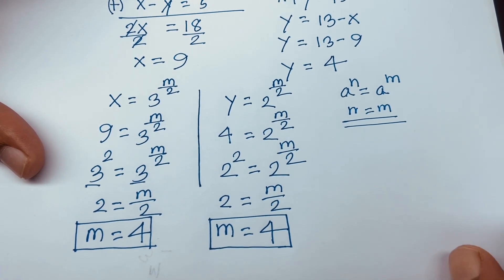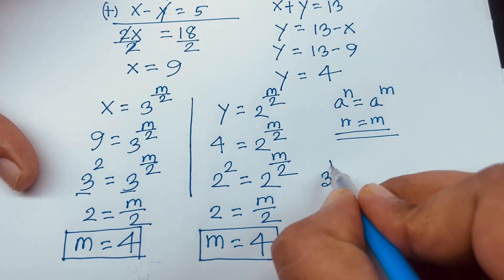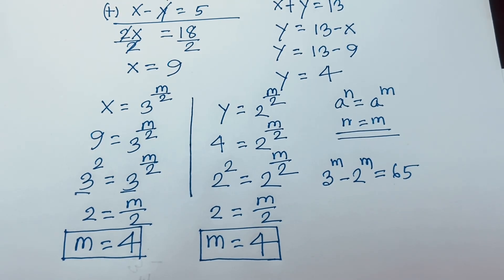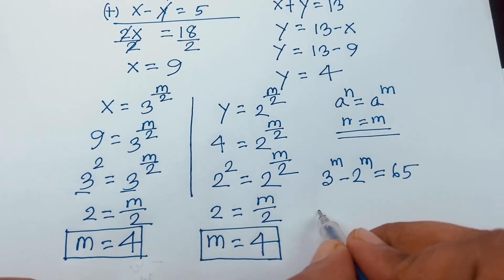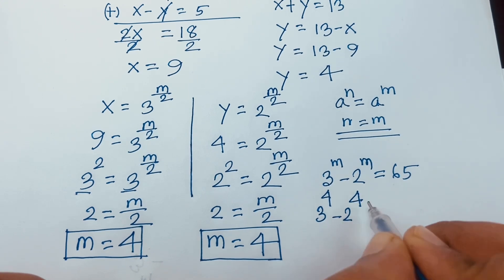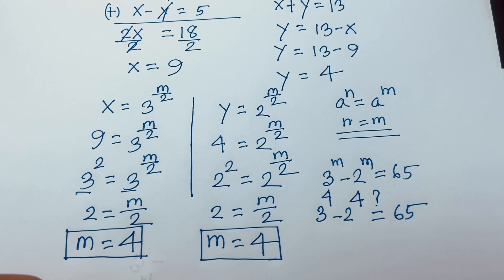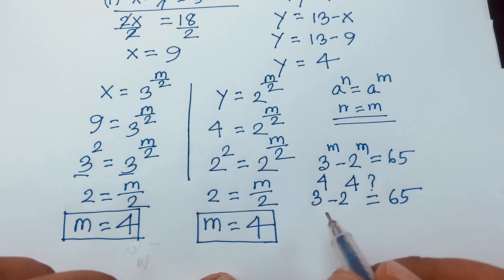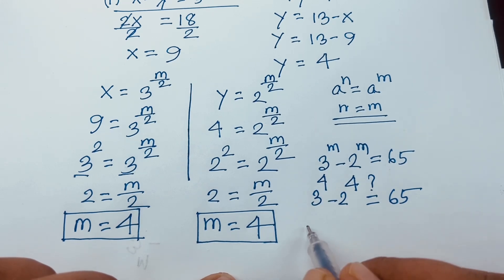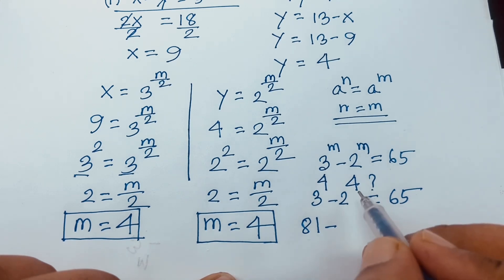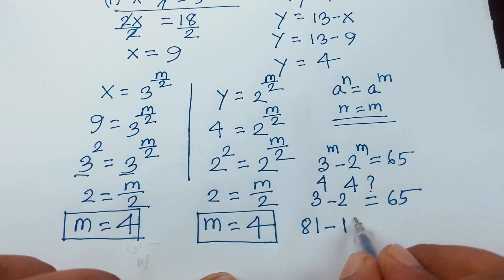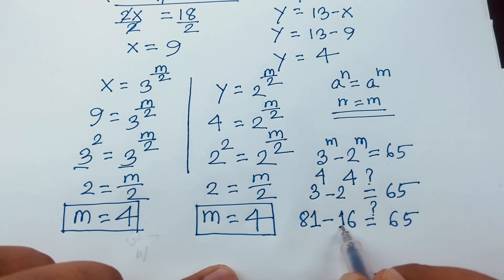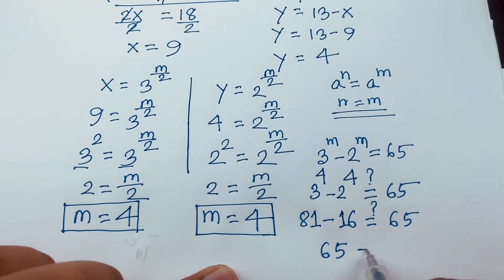Let's verify: our question is 3^m minus 2^m equals 65, and we found m = 4. So 3^4 minus 2^4: we know 3×3=9, 9×3=27, 27×3=81, so 3^4 = 81. And 2^4 = 16. Then 81 minus 16 = 65, which equals 65. Confirmed!